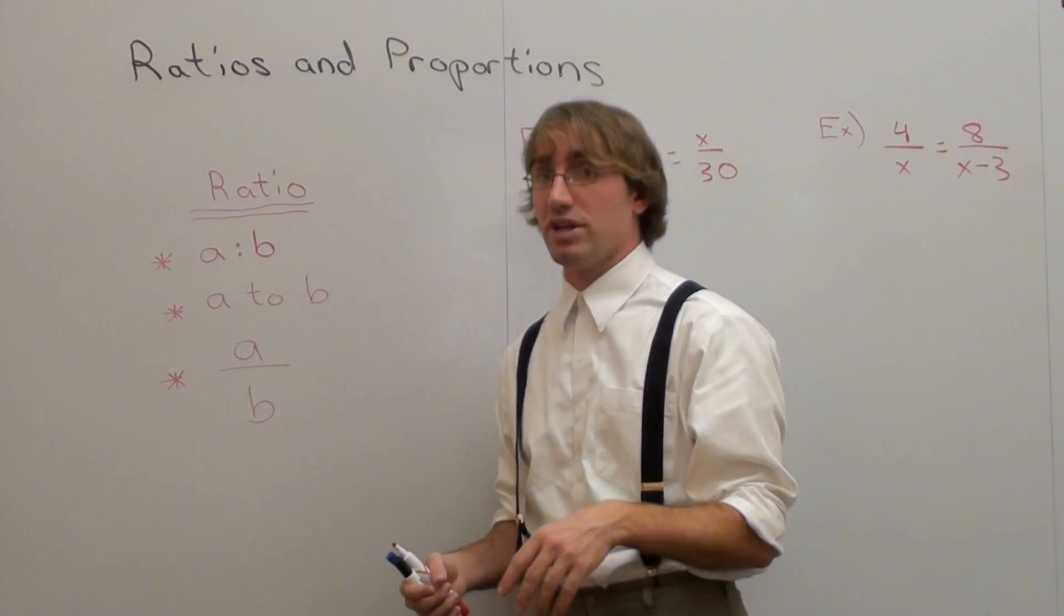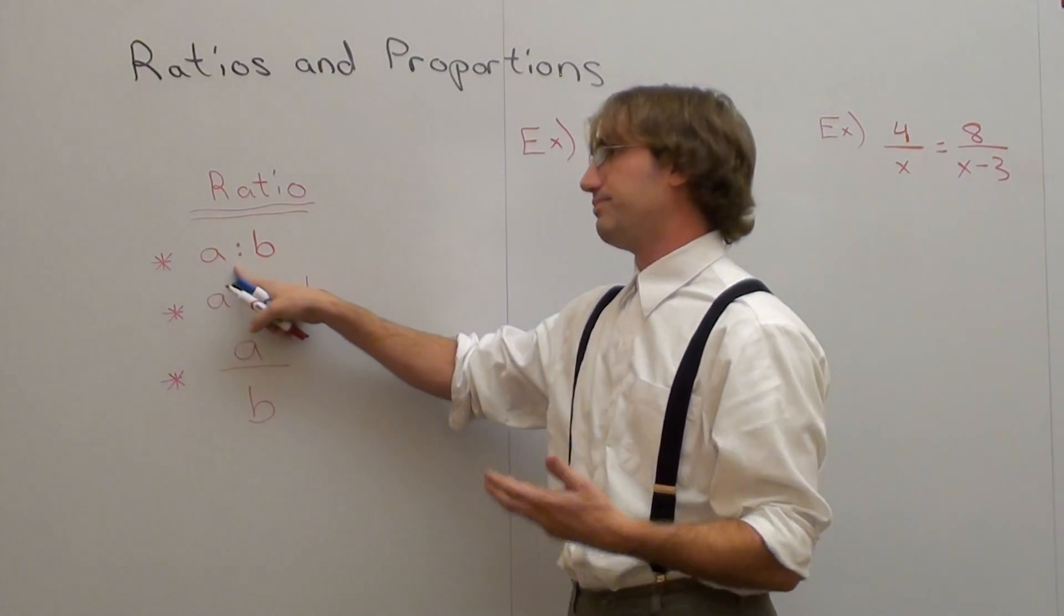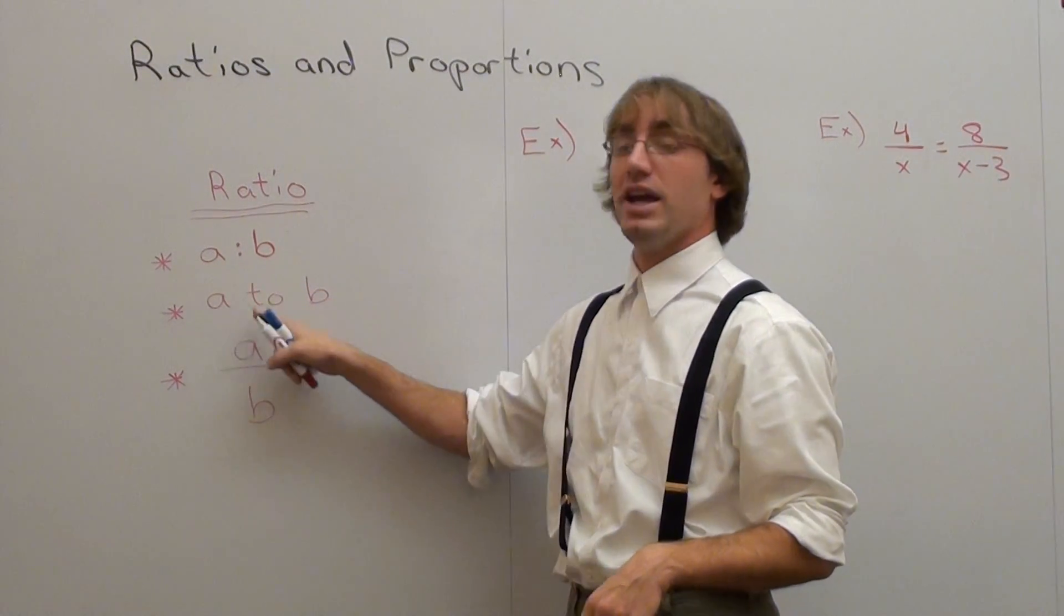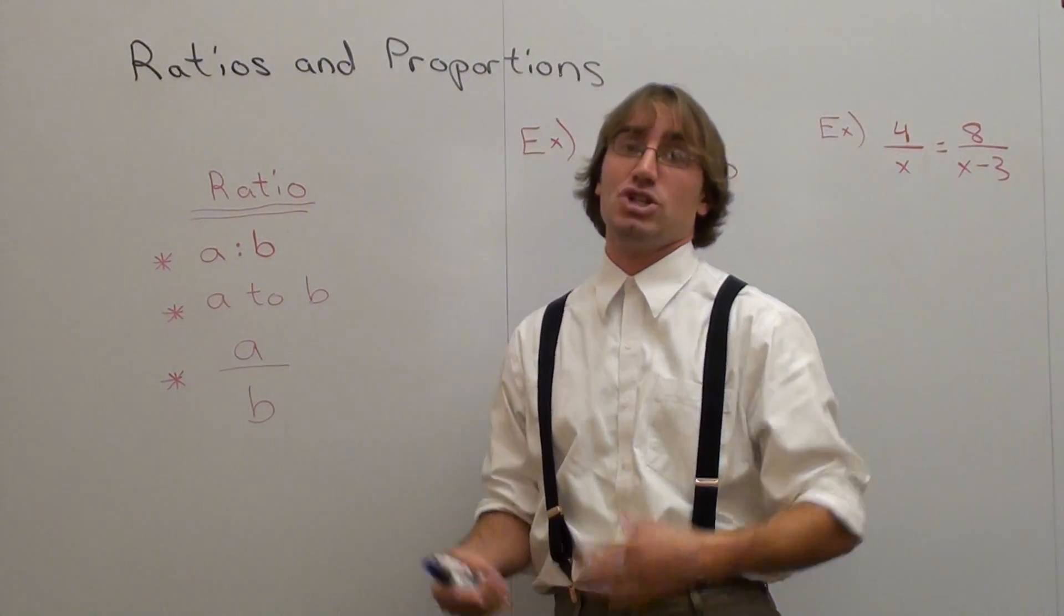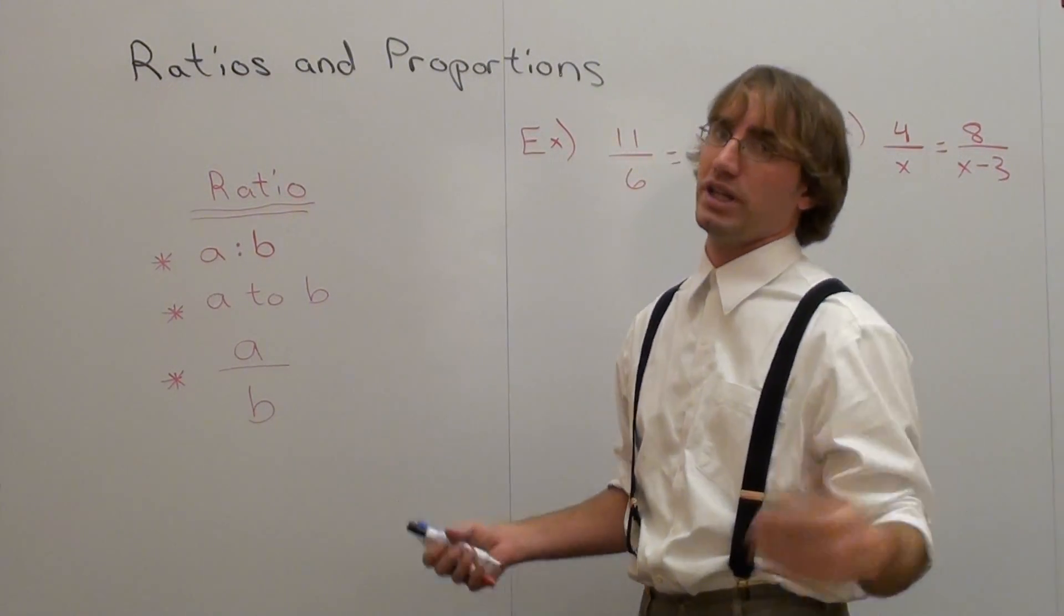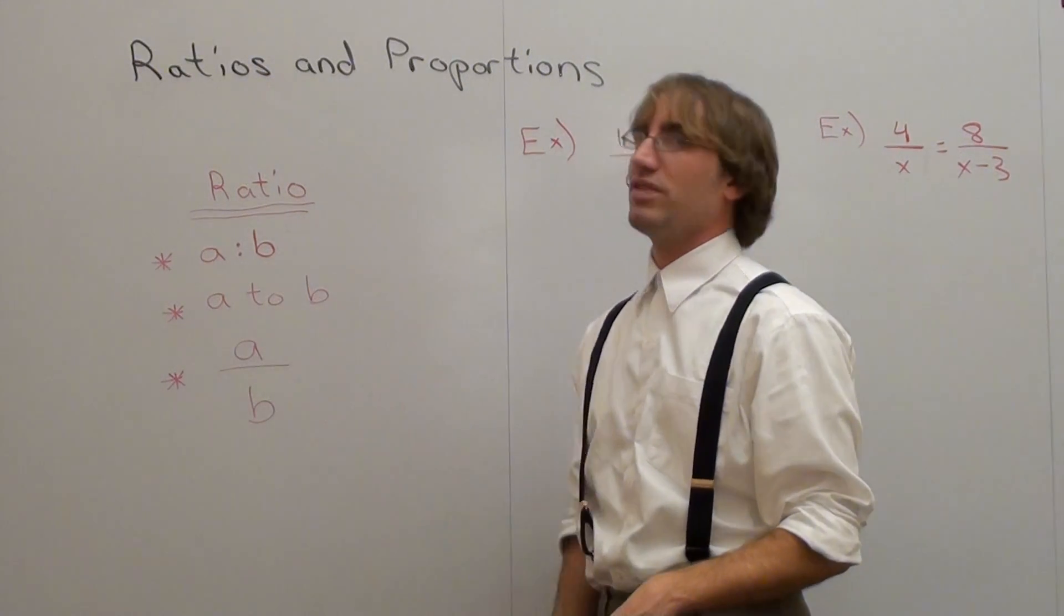Before I go over these two problems that I wrote down here, I want to define what a ratio is. You can see a ratio in three different forms: A colon B, A to B, or A over B. Essentially what a ratio is, is just a fraction. That's all it is. But it can be written in any one of these three forms.